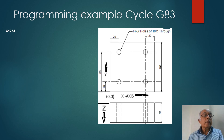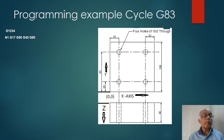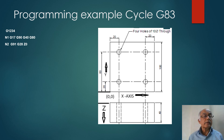We will start making the CNC program. The first block is the program number. O is the code for program number in Fanuc control — maximum four-digit number. N1 is the first block, where we have given codes which make the machine ready for a new job: G17 is XY plane selection, G90 is absolute programming mode, G40 is cancellation of cutter compensation, and G80 is cancellation of any canned cycle used in the previous program. In block number two, N2, we send the machine to the reference point for the Z axis. G91 and G28 are codes for auto-referencing the machine for the Z axis.